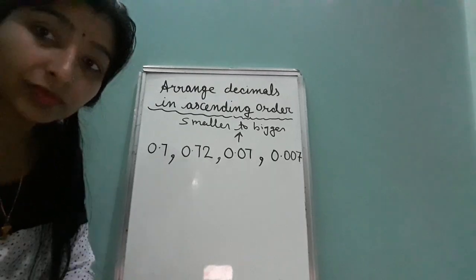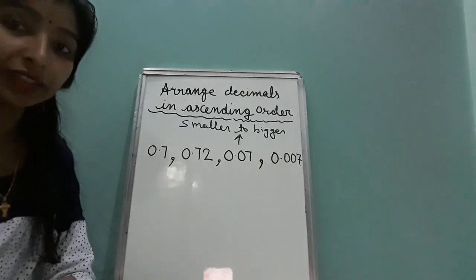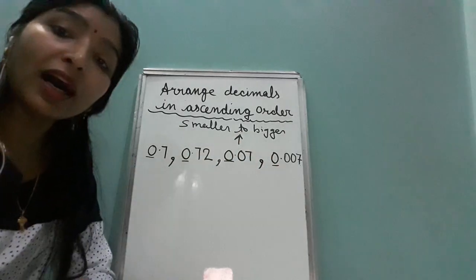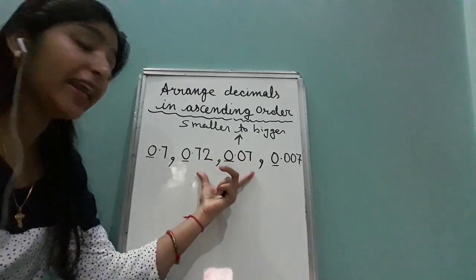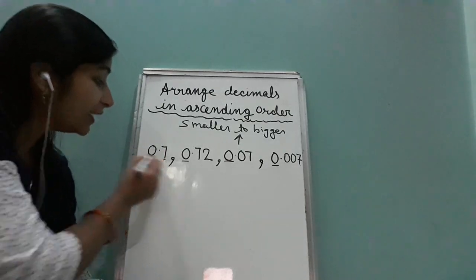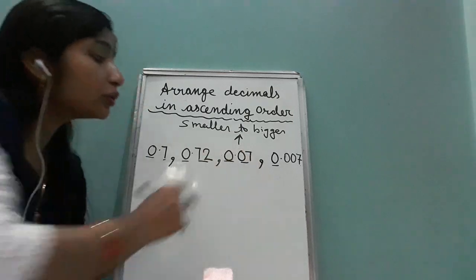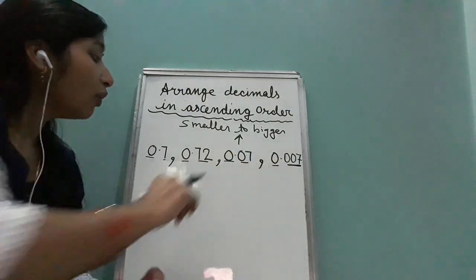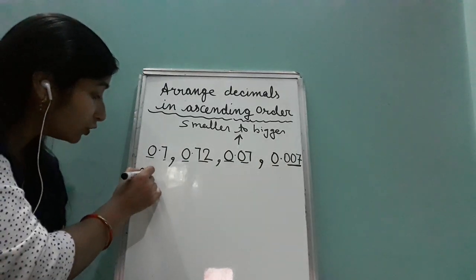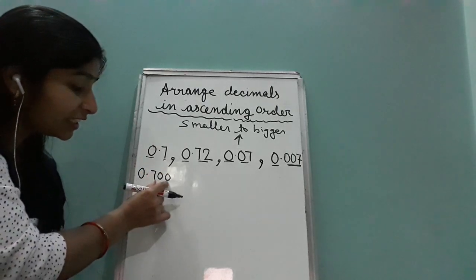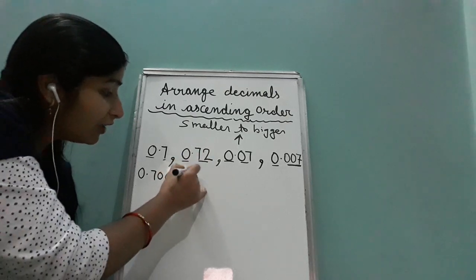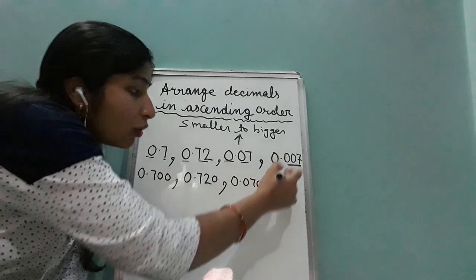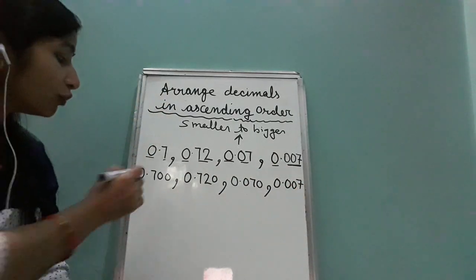Let's take one more example. We have decimal numbers where the whole part is the same for all. Now checking if they are like decimals — one number has one decimal place, another has two, another two, and one has three decimal places. Three is the largest, so we make all numbers up to three decimal places by putting zeros: 0.700, 0.720, 0.070, and 0.077.